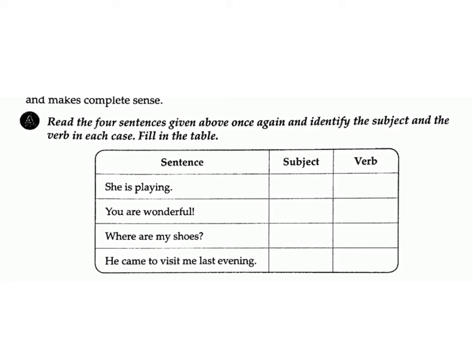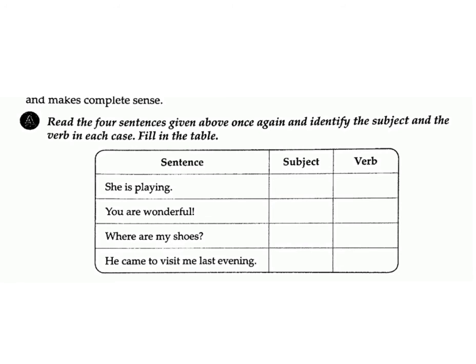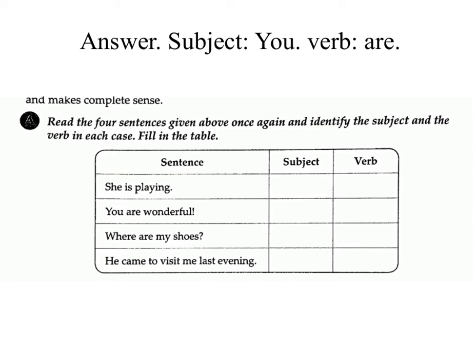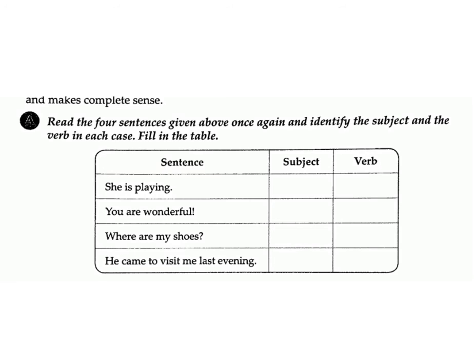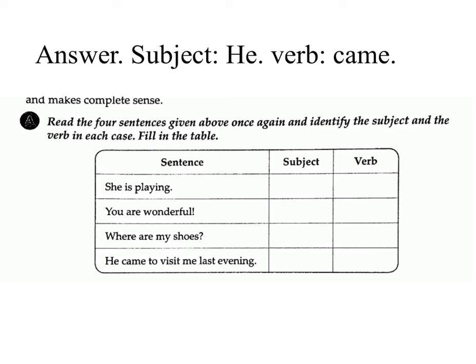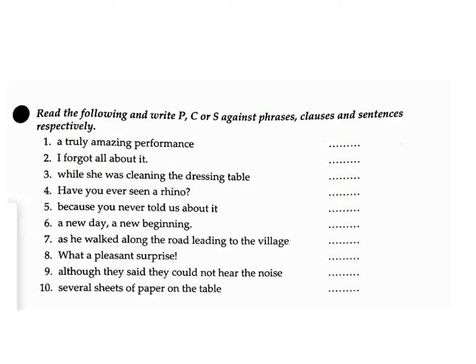Exercise A: Read the sentences and identify the subject and verb in each case, then fill in the table. 'She is playing' — subject: she, verb: is playing. 'You are wonderful' — subject: you, verb: are. 'Where are my shoes?' — subject: my shoes, verb: are. 'He came to visit me last evening' — subject: he, verb: came.